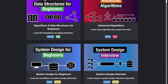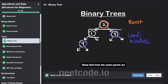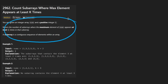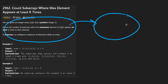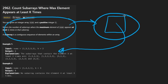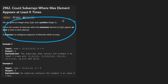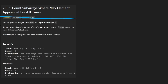Hey everyone, welcome back and let's write some more neat code today. So today let's solve the problem: count subarrays where max element appears at least k times. I really like this problem because I completely misinterpreted it and solved a slightly different problem, but that slightly different problem was similar enough that I was able to correct my original solution.